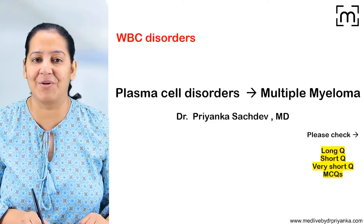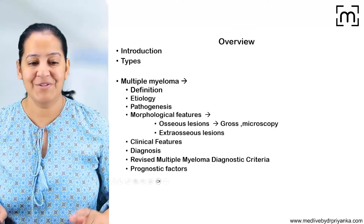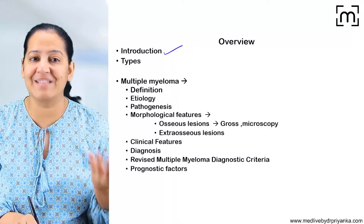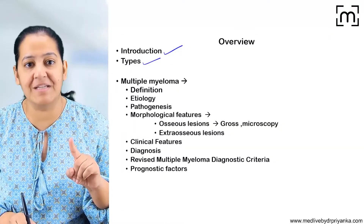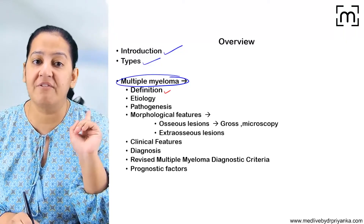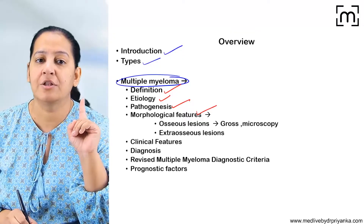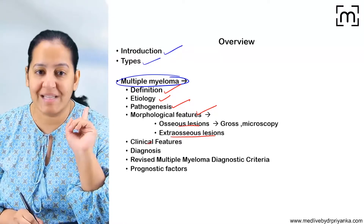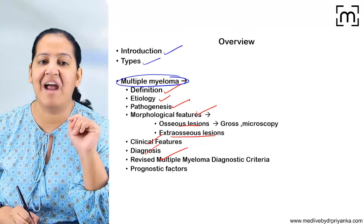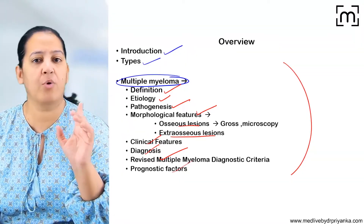There are five plasma cell disorders but we will discuss one in detail — multiple myeloma. First I will give the introduction of what plasma cell disorders are, then the classification and various types. One of the most important types is multiple myeloma. In multiple myeloma I will cover the definition, etiology, pathogenesis, morphological features, osseous and extra-osseous lesions, clinical features, diagnosis, revised multiple myeloma diagnostic criteria, and prognostic factors.